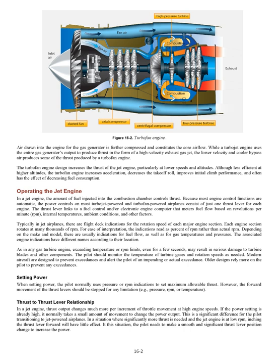Operating the jet engine. The amount of fuel injected into the combustion chamber controls thrust. Because most engine control functions are automatic, the power controls typically consist of just one thrust lever per engine. The thrust lever links to a fuel control and/or electronic engine computer that meters fuel flow based on RPM, internal temperatures, ambient conditions, and other factors. Flight deck indications show rotation speed of each major engine section as a percent of RPM. There are usually also indications for fuel flow, gas temperatures, and pressures.